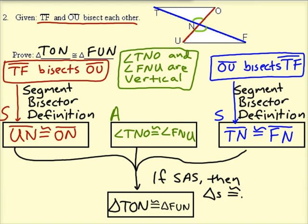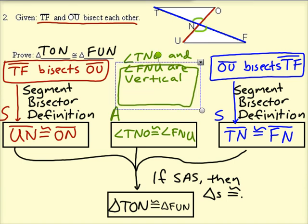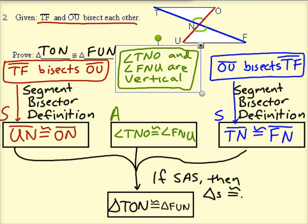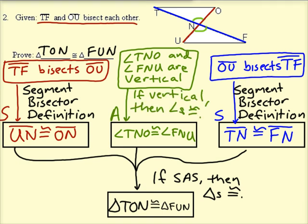So there's the statement, T-N-O, F-N-U are vertical angles. And as a result, vertical angles are congruent. So the statement is, if we have vertical angles, then those angles, those vertical angles are congruent. Super. We're done.